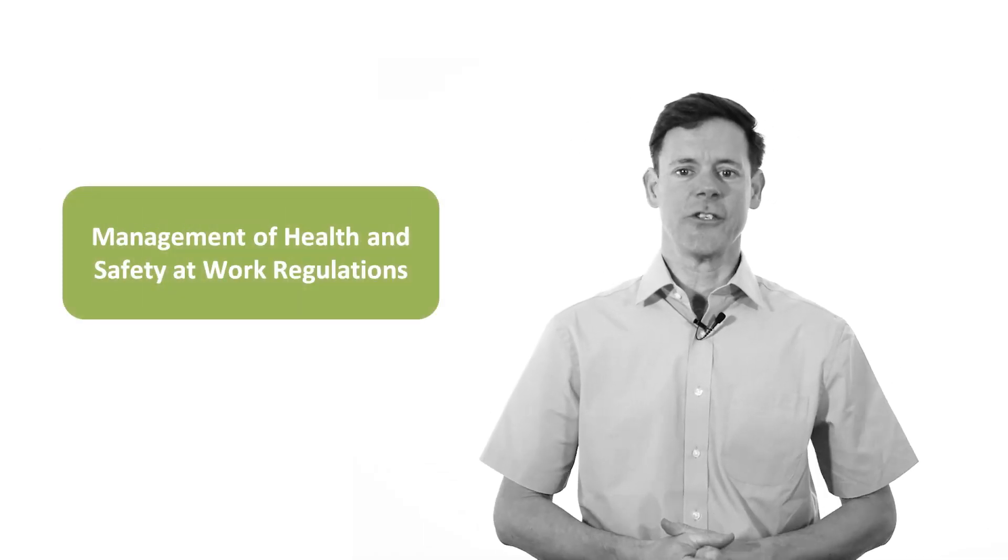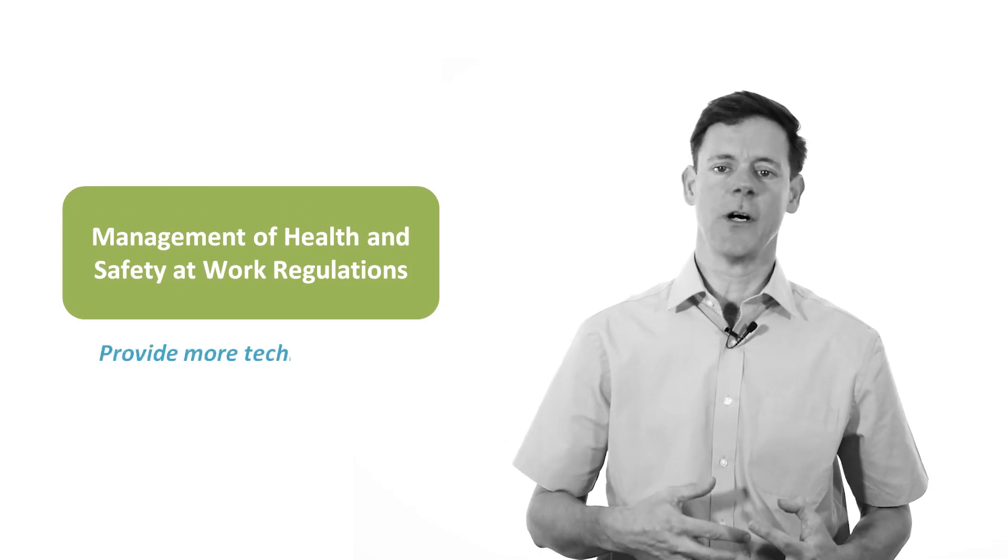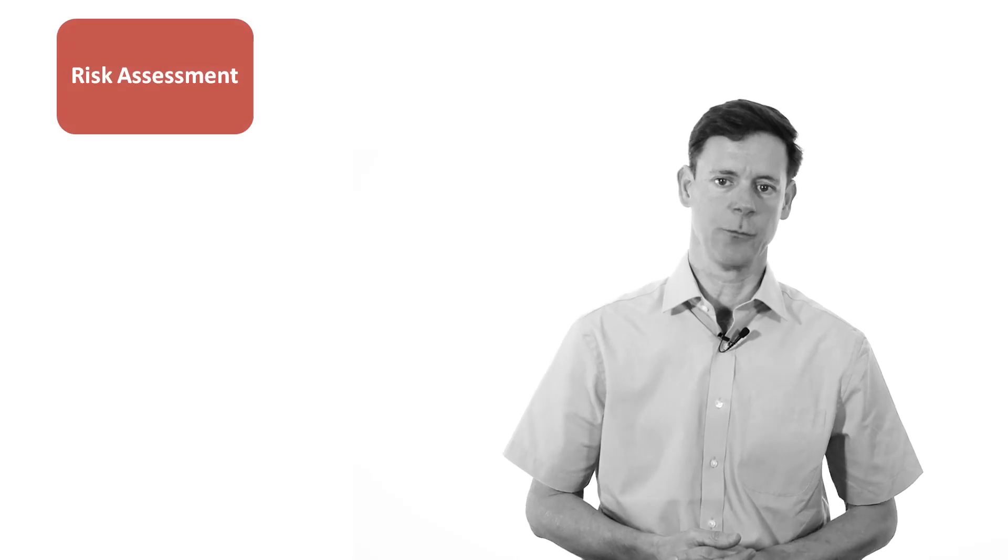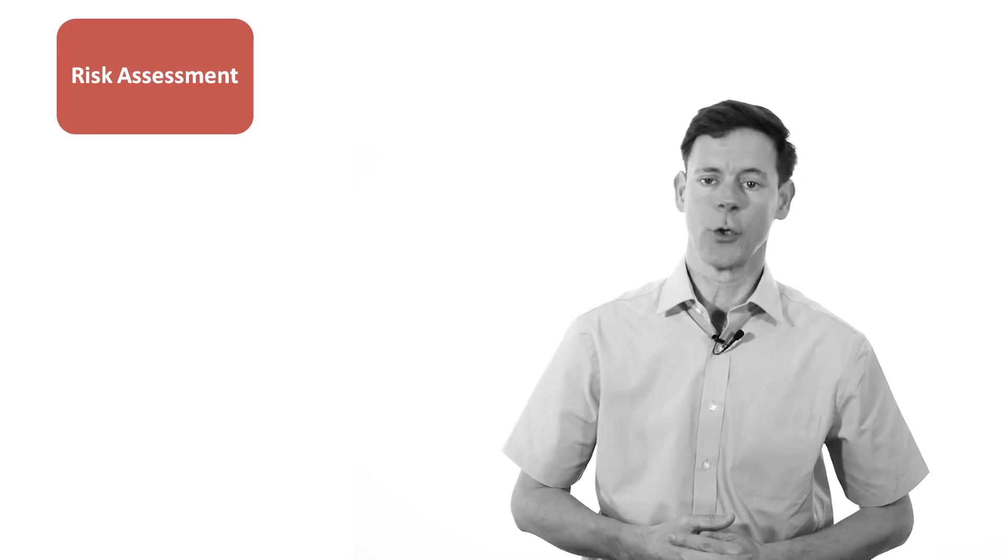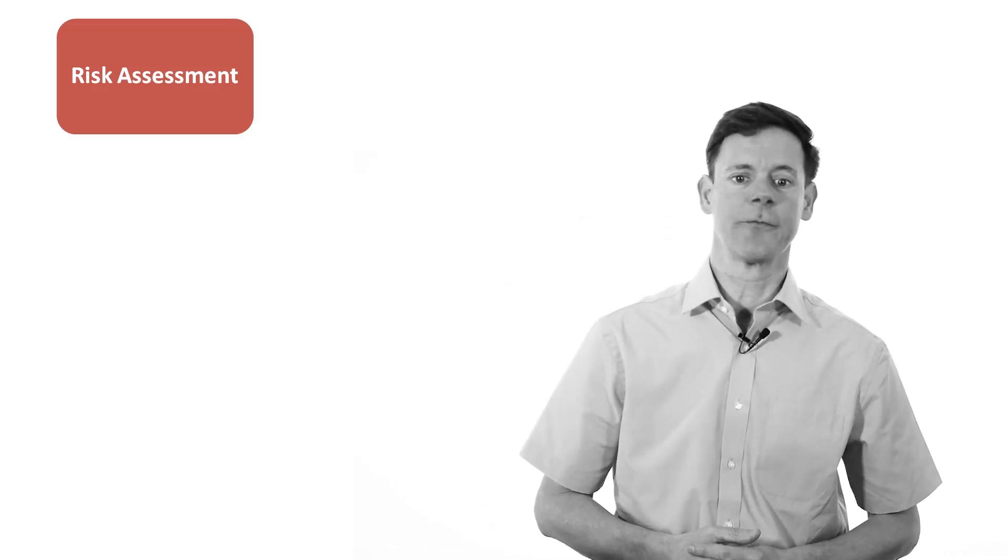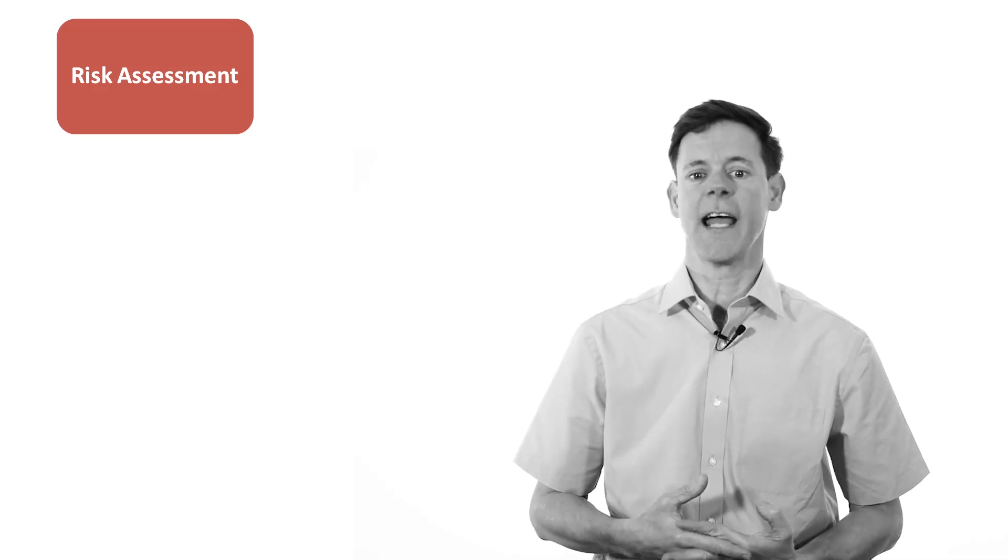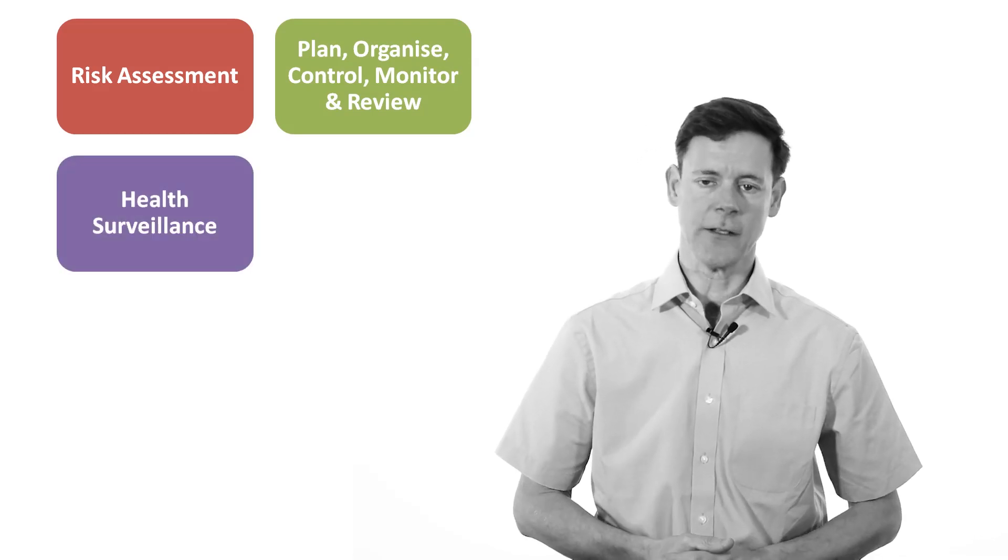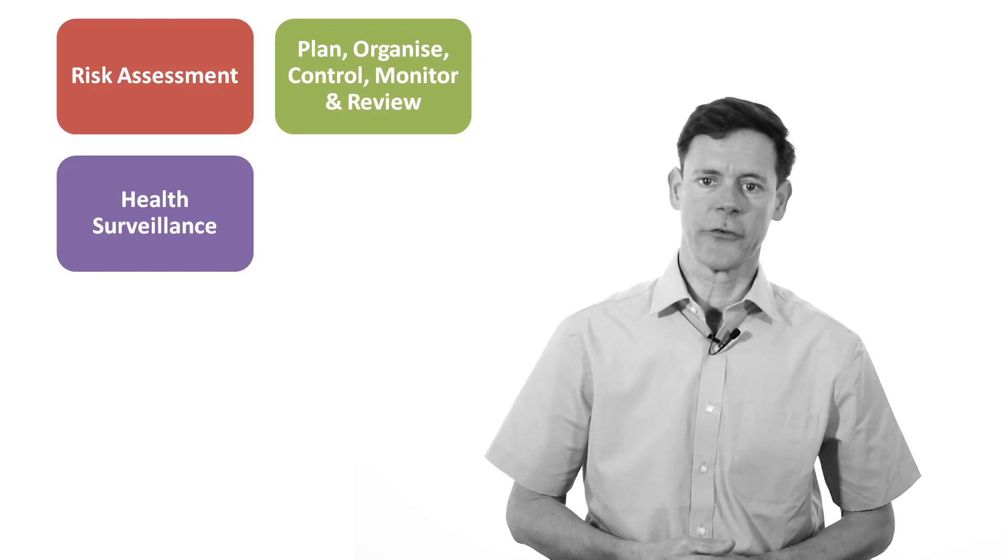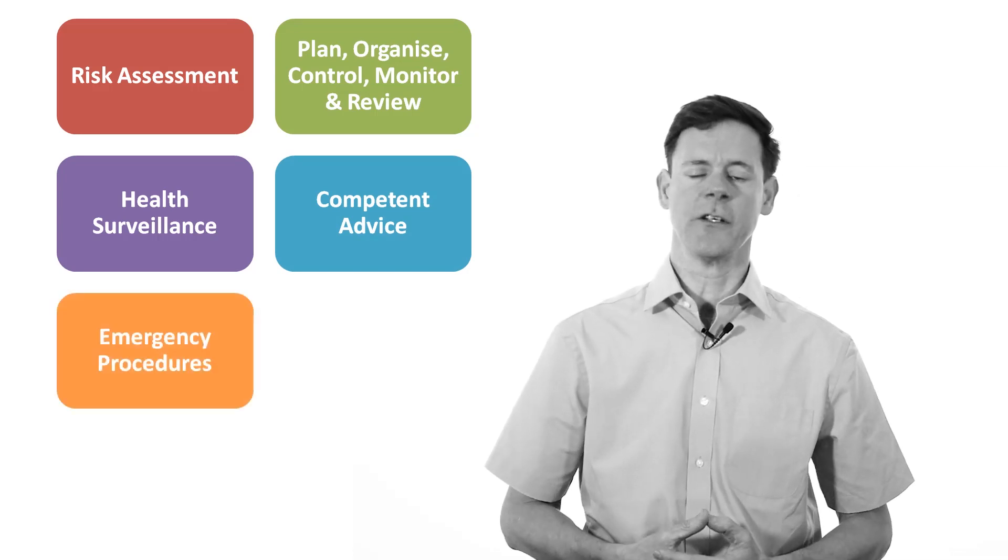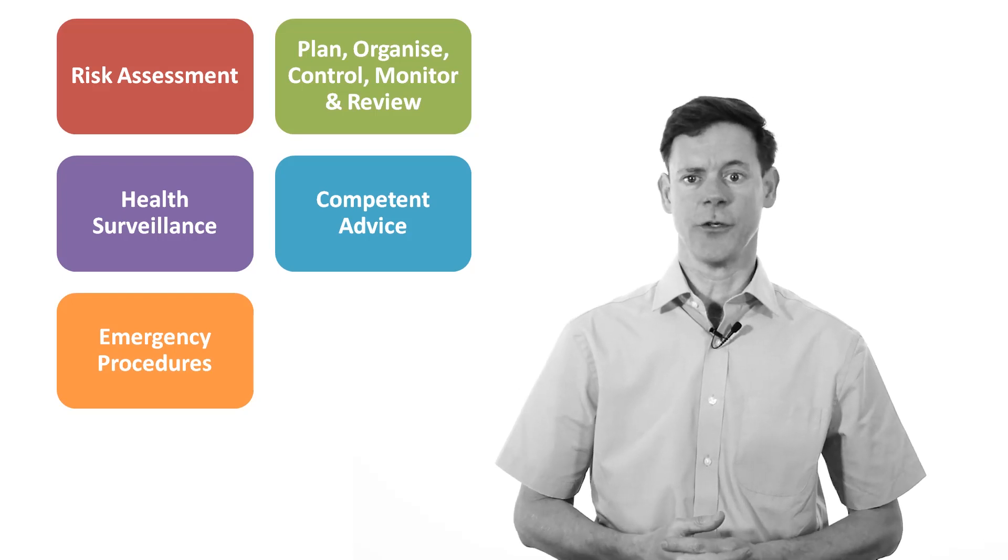The Management of Health and Safety at Work Regulations flesh out the requirements of the Act. They provide more technical detail on how to meet the general goals established by the Act. Principle amongst them, the employer must carry out a suitable and sufficient risk assessment. This risk assessment must be recorded where the employer has five or more employees, and it must be kept under review. The employer is also required to make adequate arrangements for the planning, organisation, control, monitoring and review of their preventive and protective measures, and they must provide their employees with appropriate health surveillance. The employer must appoint one or more competent persons to give them health and safety advice on how to comply with the law, and they must develop procedures to deal with serious and imminent danger. And this may require the employer to make contact with the external services.